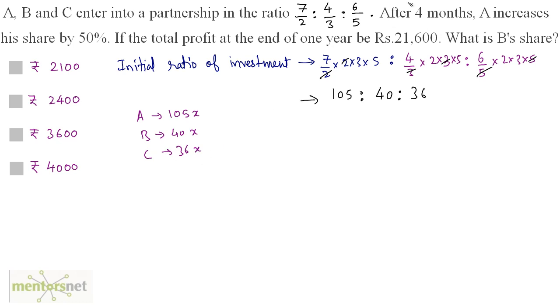After 4 months, A increases his share by 50%. So 105X is only for 4 months. After that his share is increased by 50% for the next 8 months. A's total share is 105X times 4 plus 150% of 105X times 8. When you solve this, you will get the total share of A for the 1 year as 1680X rupees.